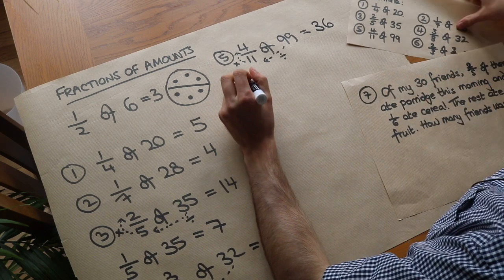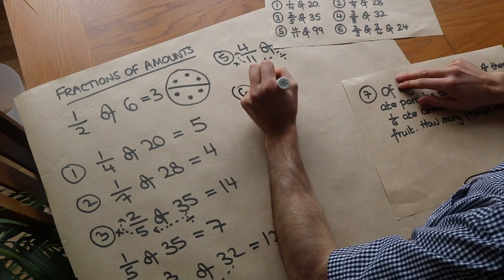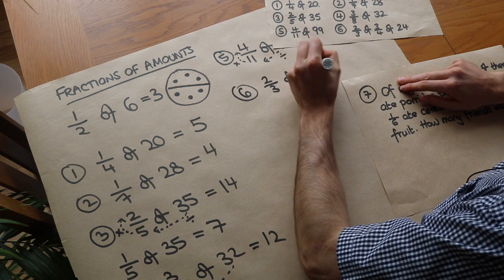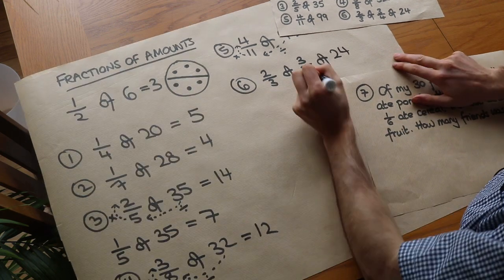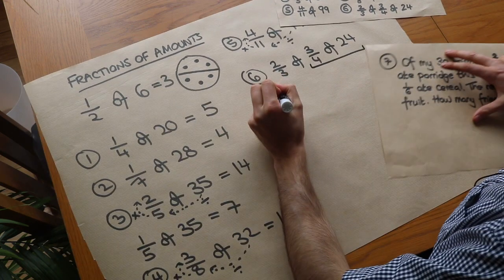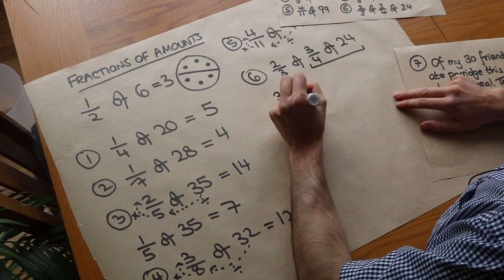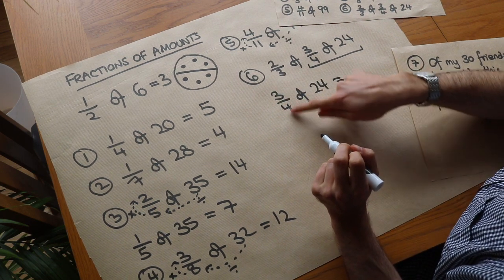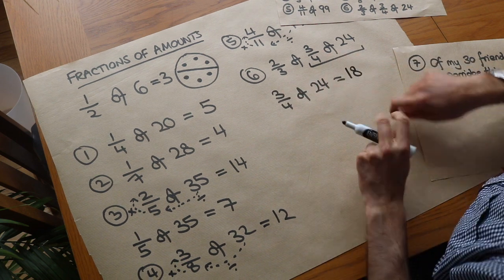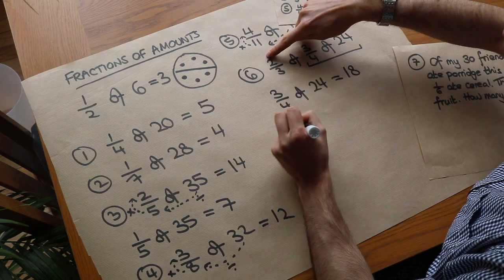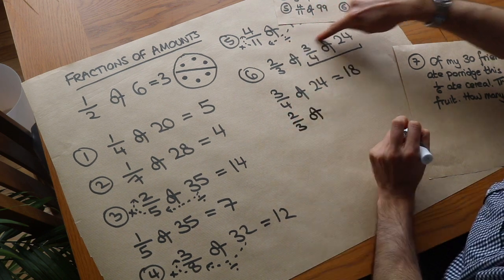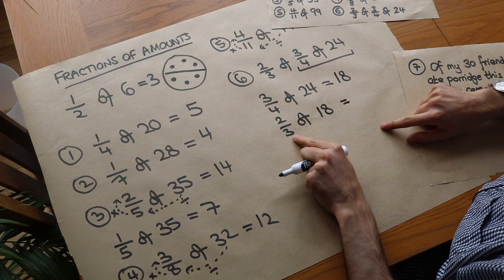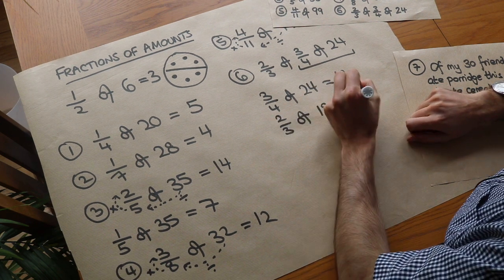The sixth one is a bit harder: we've got two thirds of three quarters of 24. Let's do this in bits. First, three quarters of 24: we divide 24 by 4, which is 6, multiplied by 3 is 18. Now we're finding two thirds of 18. 18 divided by 3 is 6, and 6 multiplied by 2 is 12.